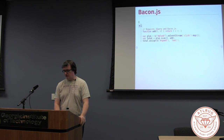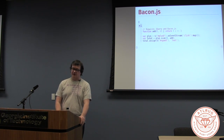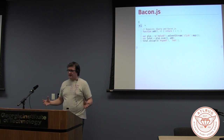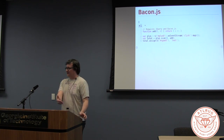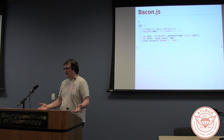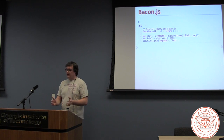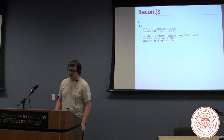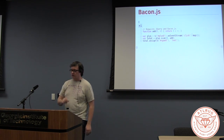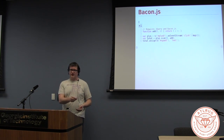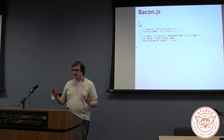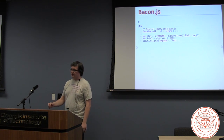Now I have this variable 'plus'. I'm using jQuery here, so I'm grabbing the element with the ID of 'plus zero', which is actually this plus-one button. Bacon hooks into both jQuery and Zepto to provide the asEventStream function. So I'm saying give me that button, and I want to get asEventStream for the click event. If you cut off at that point, plus would be an event stream where every time you click, it'll send the click event arguments through the stream. But I don't care about those — I just want to turn it into a one. Every time you click the button, a one comes through the stream.